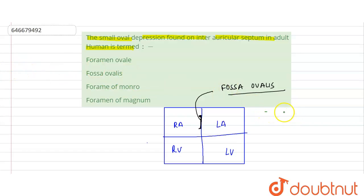This is called as the fossa ovalis. So in the later stage of gestation, of the pregnancy, what happens is that it starts getting filled up, and only thin rim is left.